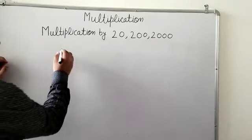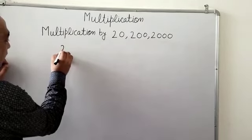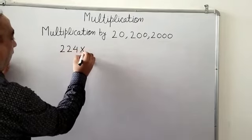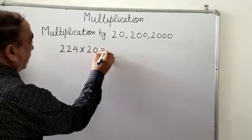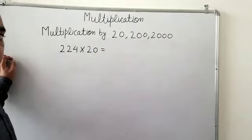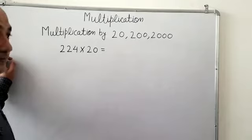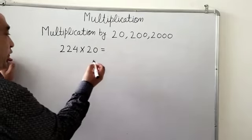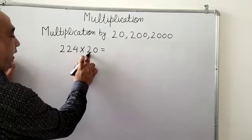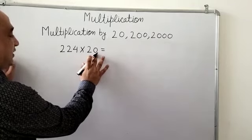For example, if you want to multiply 224 by 20, you can find this answer directly with the help of verbal multiplication. What you have to do is multiply 224 by 2, leave this 0.